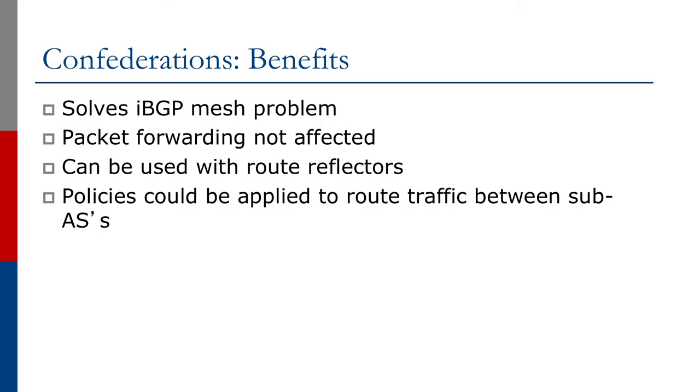Like route reflectors, confederations do solve the IBGP mesh scaling problem, don't touch packet forwarding, and we could even apply some policies to route traffic between the different sub-ASs.